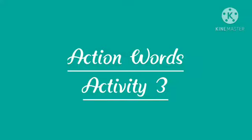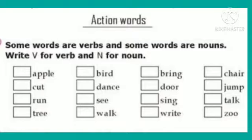Hello students. Today we will do the third activity of action words. In this activity, some words are given. In these words, some words are verbs and some words are nouns. You have to find out which word is noun and which word is verb. You have to write V for verb and N for noun. Let's start this activity.